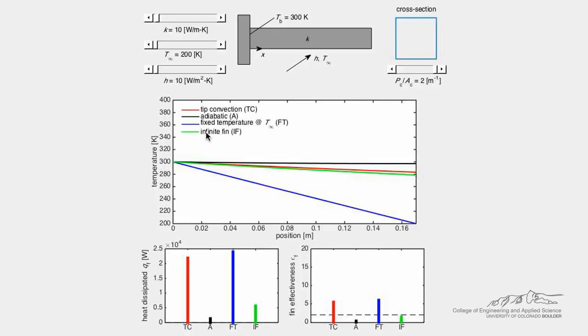The analysis assumes steady state, one-dimensional heat conduction in the fin, constant thermal properties, a fin base temperature T_B pinned at 300 Kelvin, and no radiation or volumetric heat generation.